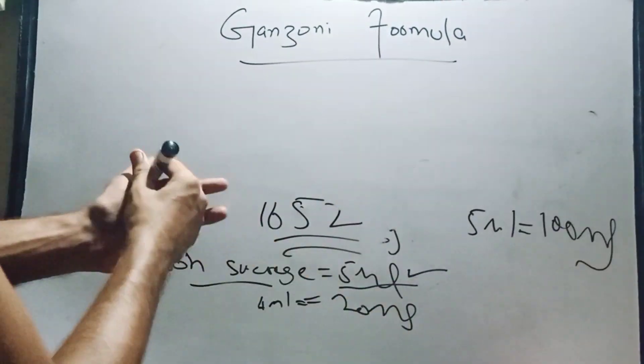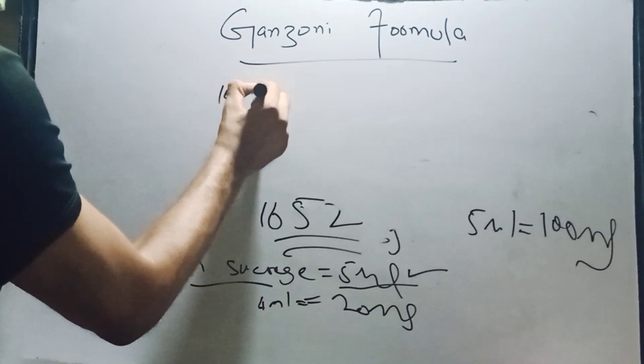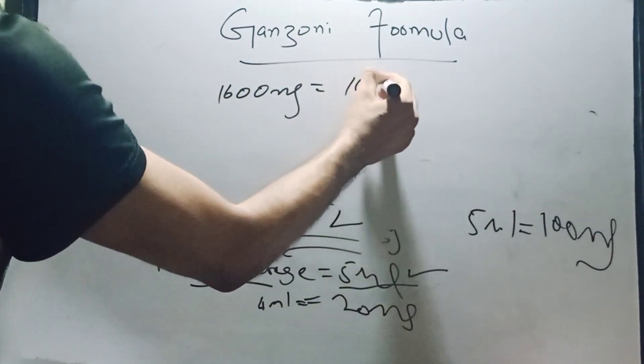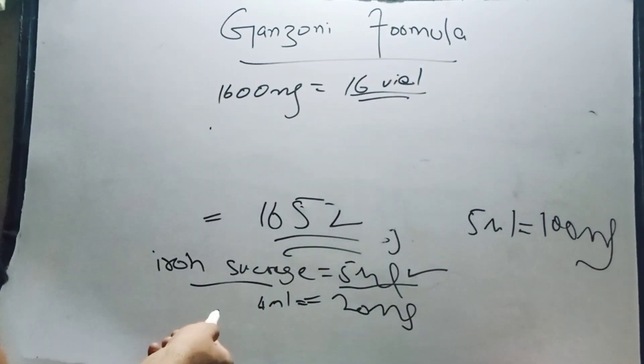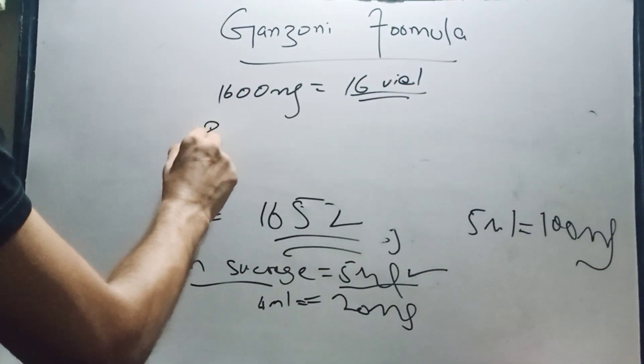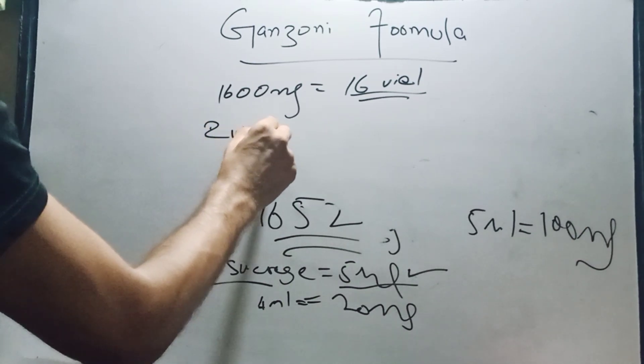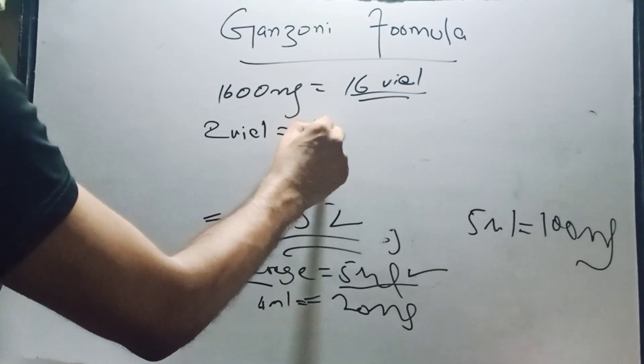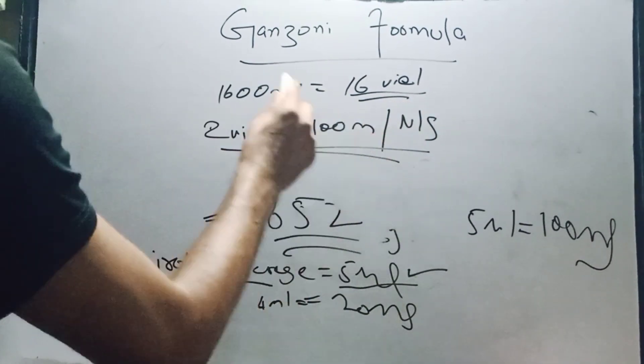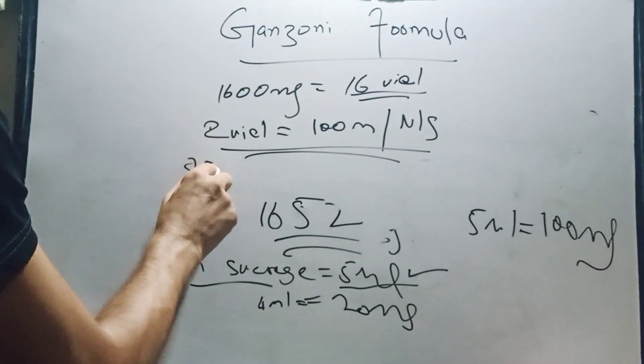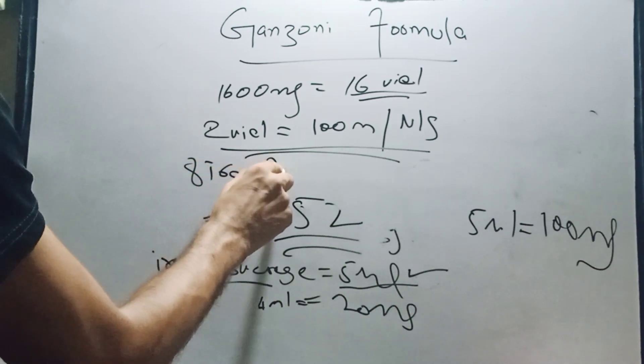We usually transfuse 2 vials of iron sacrose in 100 ml normal saline at a time, so this patient needs almost 8 transfusions of 2 vials of iron sacrose.